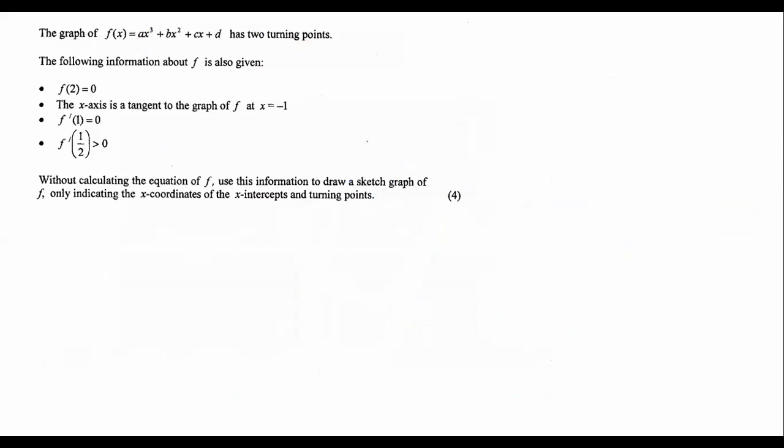The graph of f(x) = ax³ + bx² + cx + d has two turning points. The following information is also given. So let's understand this very nicely. This part over here, I want you to look at that and really think about what does that mean?